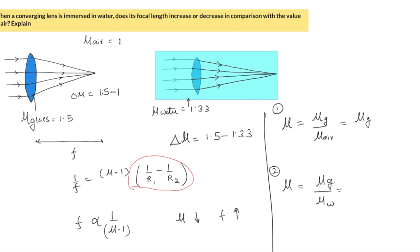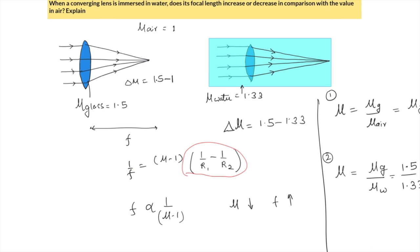So for scenario 1, it is 1.5, whereas for scenario 2, it is 1.5 divided by 1.33, which comes out to be 1.12.